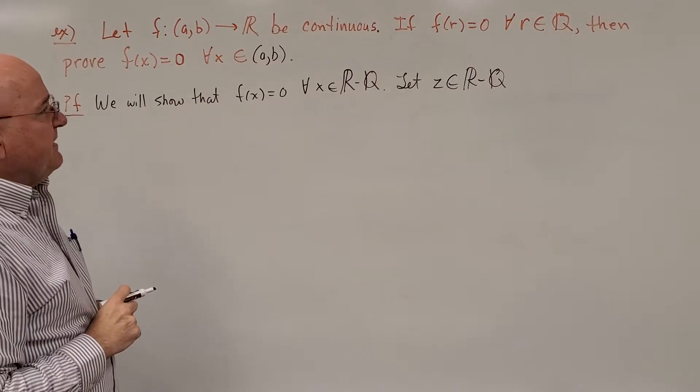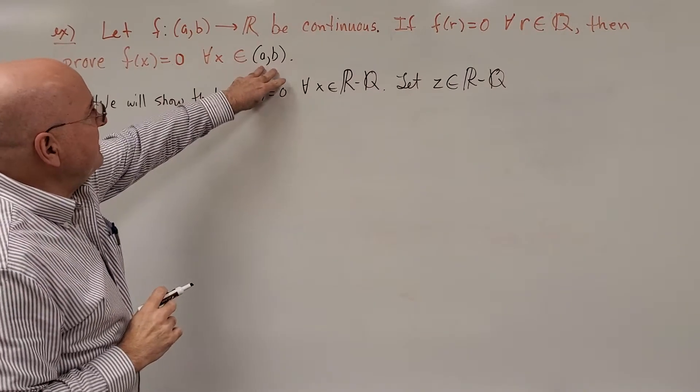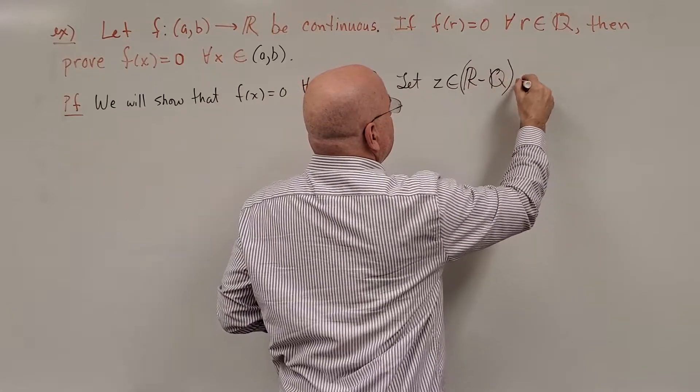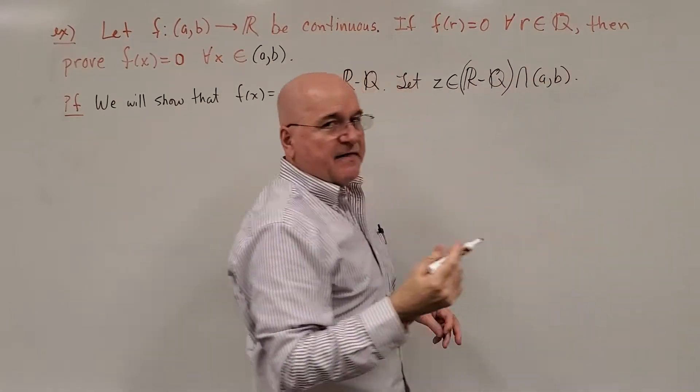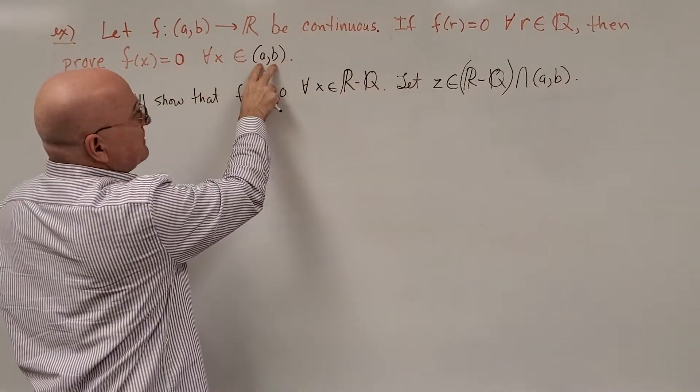So, let z be an irrational number, and it needs to be in here, so maybe I will say a... There. Looks rather confusing, but all that is saying is, let z be an irrational number in this interval.